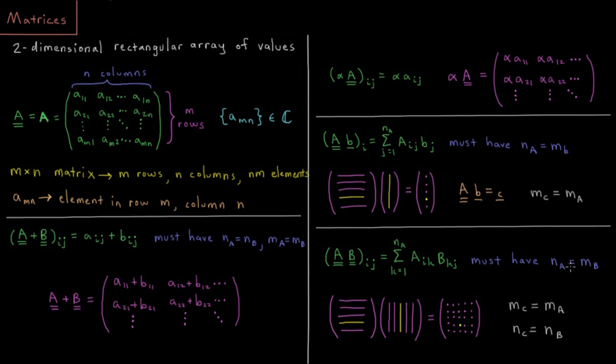Similarly here, we have to have that the number of columns in matrix A is equal to the number of rows in matrix B. Otherwise, these matrices are incompatible, and we can't multiply them together in this way.